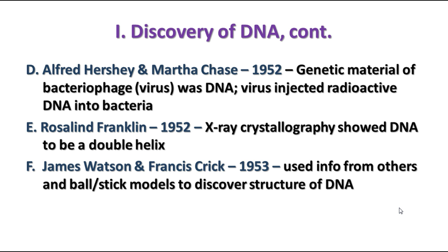James Watson and Francis Crick are credited with discovering the structure of DNA. Basically, they took all these pieces of information that other people had discovered and used ball-and-stick molecule models to figure out the structure we now know as DNA. Watson and Crick won the Nobel Prize for it, but they stood on the shoulders of people before them who had discovered other things.